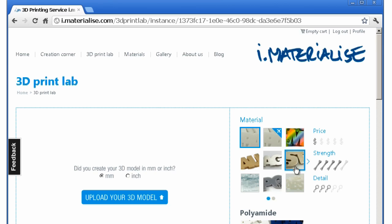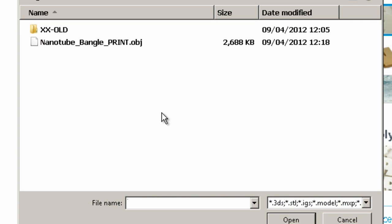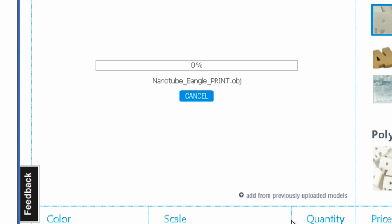Having done that I will now go to the iMaterialize website. I've already created an account on this site and therefore I can go straight into uploading my model. So there we are, upload model and I will pick up the object I've just exported and that will sit there whizzing along. It's loading the thing in.